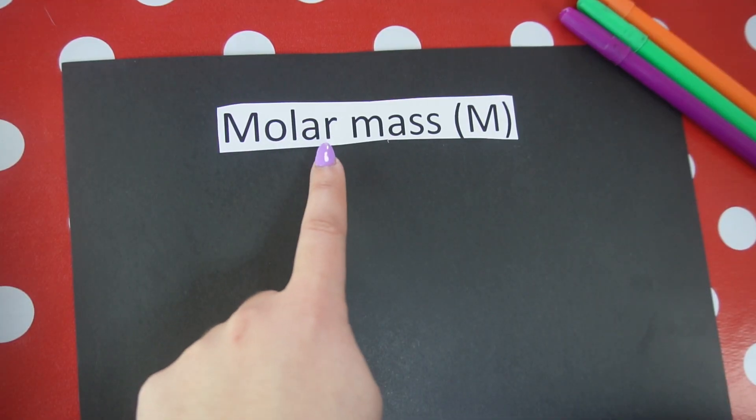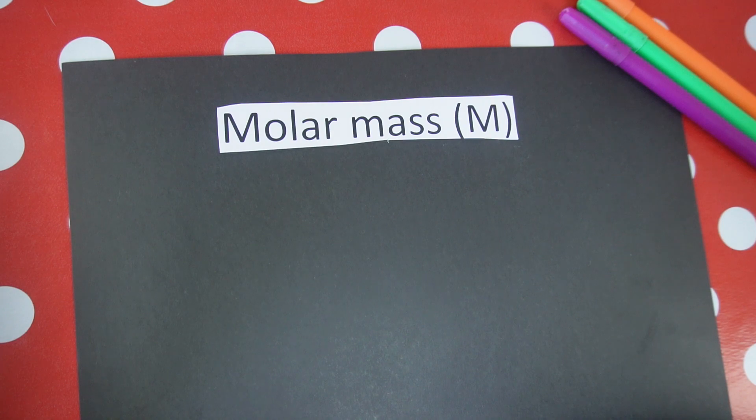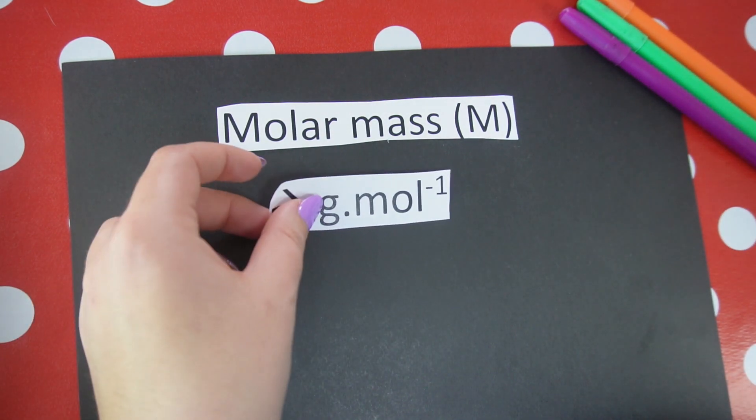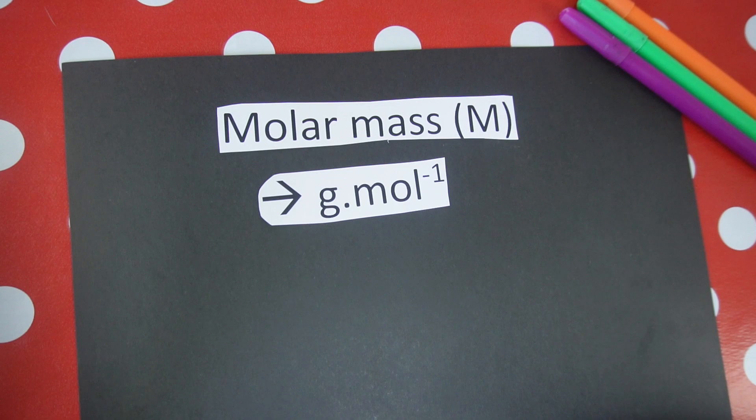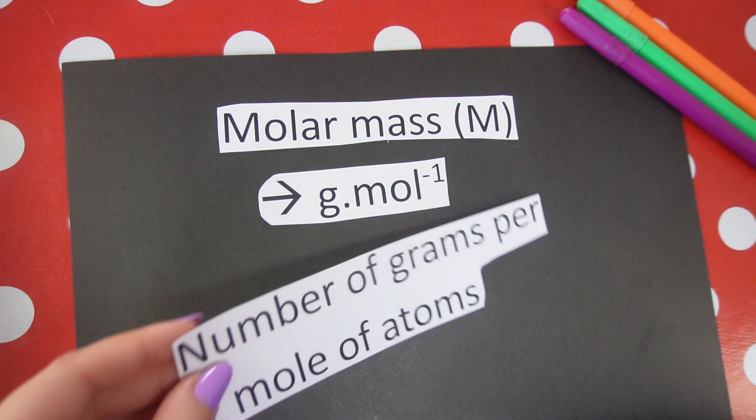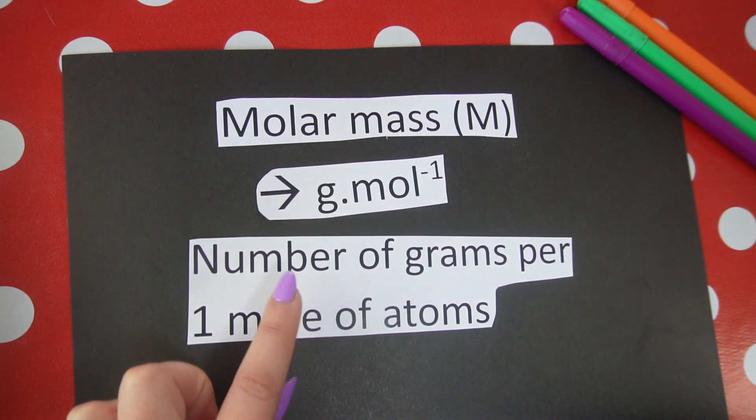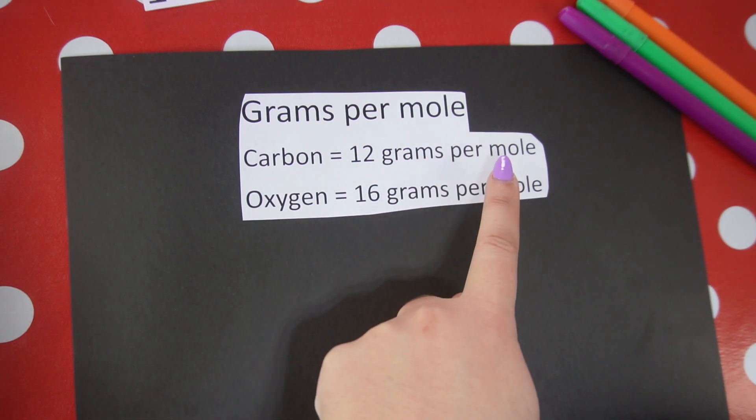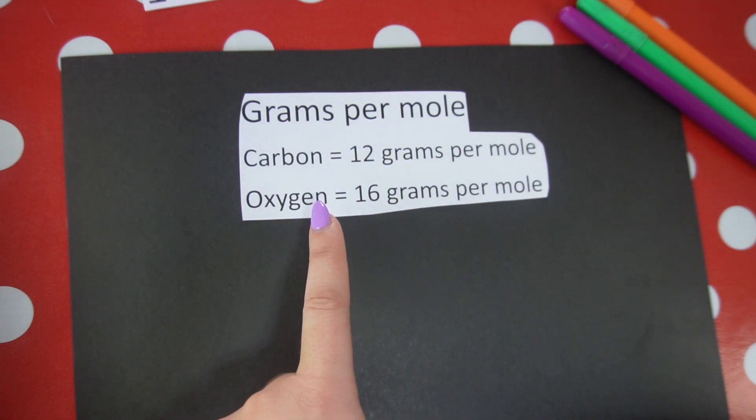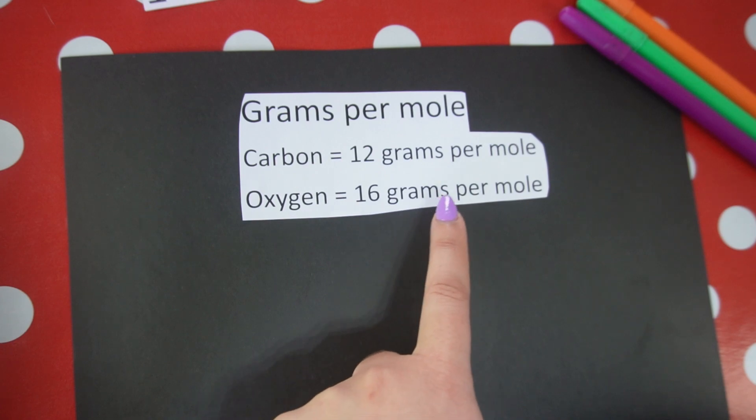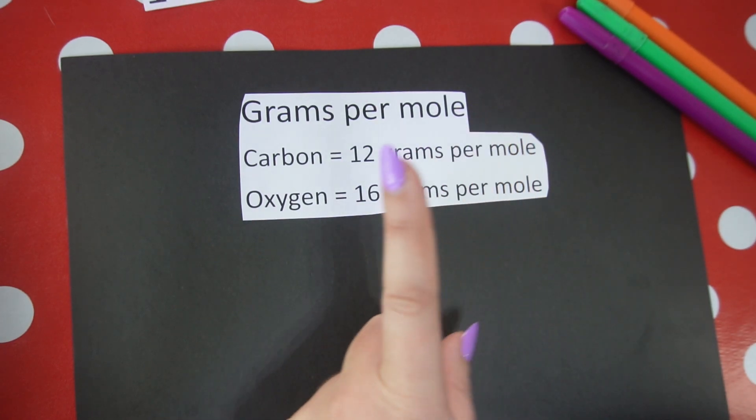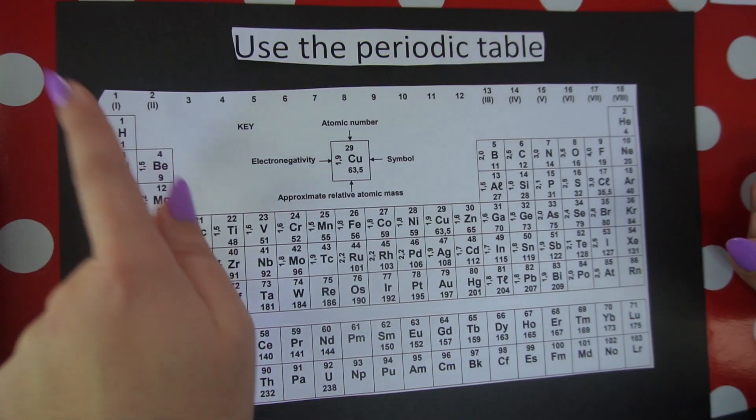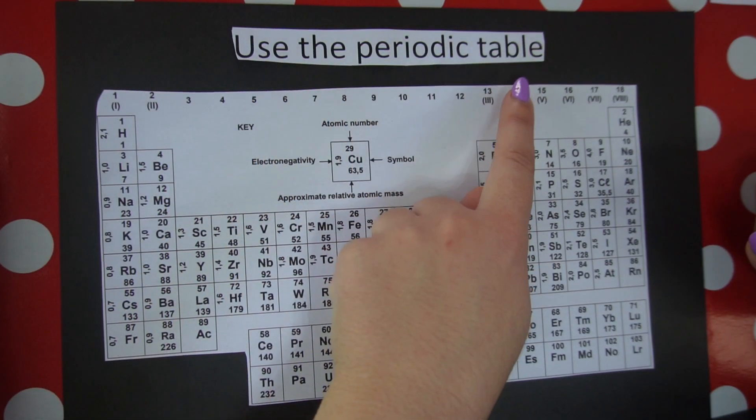The symbol for molar mass is M and the unit for molar mass is grams per mole. The reason why this is the unit is because molar mass represents the number of grams per one mole of atoms. For example, if we look at carbon we have 12 grams per one mole. For oxygen we have 16 grams. Where do these numbers come from? We're going to use the periodic table.